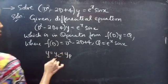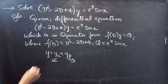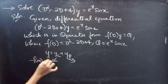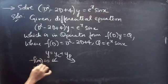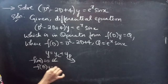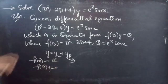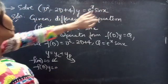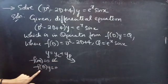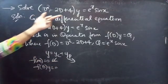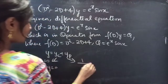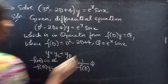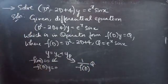Here yc is the complementary function and yp is the particular integral. We will find yc using the roots of the auxiliary equation or homogeneous equation of the given non-homogeneous equation. Simply by putting the RHS to 0, we will get f(D)·y = 0, which is the homogeneous equation. And we will find yp using 1/f(D) into Q. So let's begin with yc.